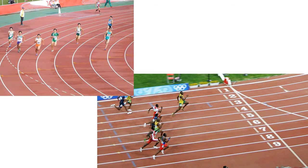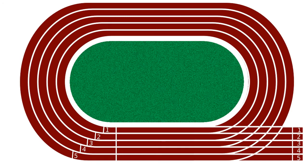Now consider the 100m and 400m running events of a sports meet. You can see the 100m track, which is a straight line, and the 400m track, which is a round track. Both events are short distance races but there are some clear differences between them.